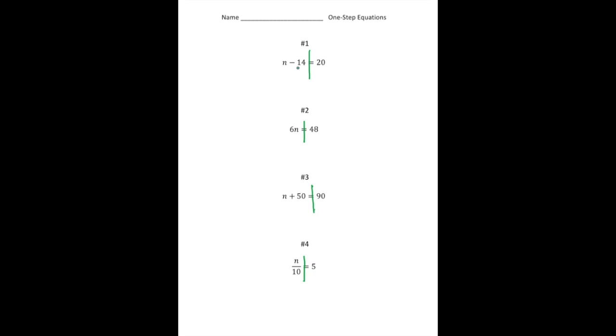So n minus 14 equals 20. So the opposite of take away 14 is adding 14. Add 14. And 20 plus 14 gives you 34. So n equals 34. Again, those will cancel out.